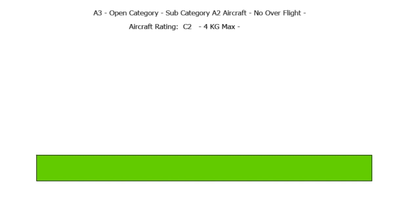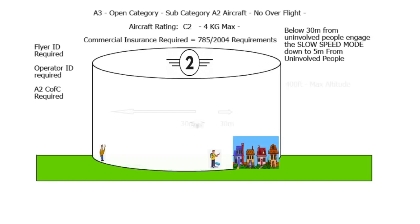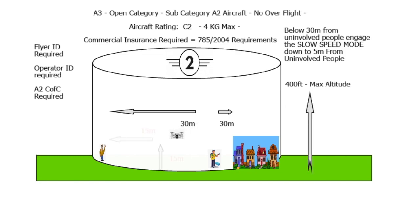Now, here we go into the one-to-one rule. If your aircraft is C2 marked, when you get below 30 meters as you come down, you must engage the slow speed mode. Here's our aircraft descending — at 15 meters, 50 meters horizontal separation. At 5 meters is the minimum, and it must be 5 meters from uninvolved people, be they in houses or cars.